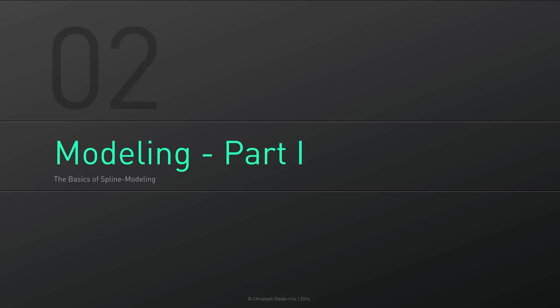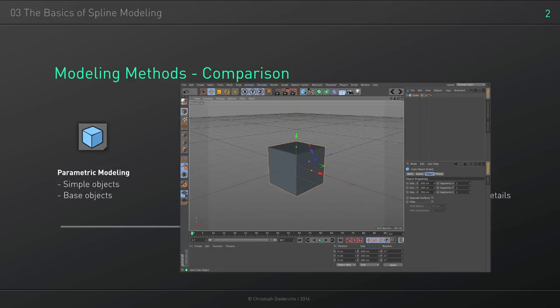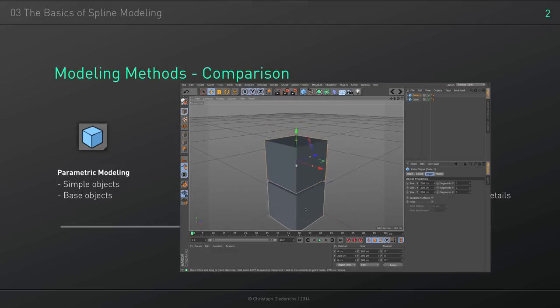Welcome back to the C4D Fundamentals series. Today we'll start into the world of modeling by having a look into spline modeling. But before that, let's compare the different modeling techniques we can use in Cinema 4D. We already talked in the first session about the parametric modeling options we have by using the parametric objects in Cinema 4D.